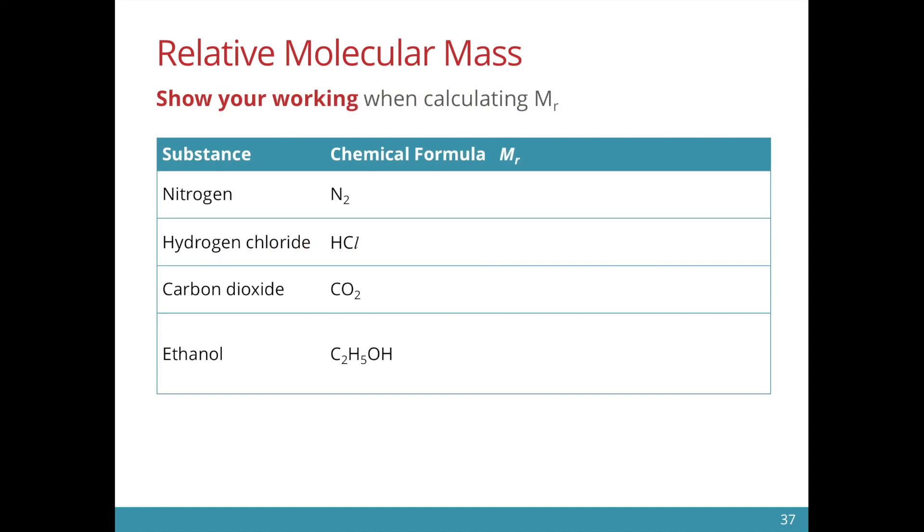Let's take a look at some examples. For nitrogen N2, there are two nitrogen atoms in the molecule. So when we calculate the MR, we have to take 2 times 14 which equals 28. So 14 is the relative atomic mass of nitrogen.